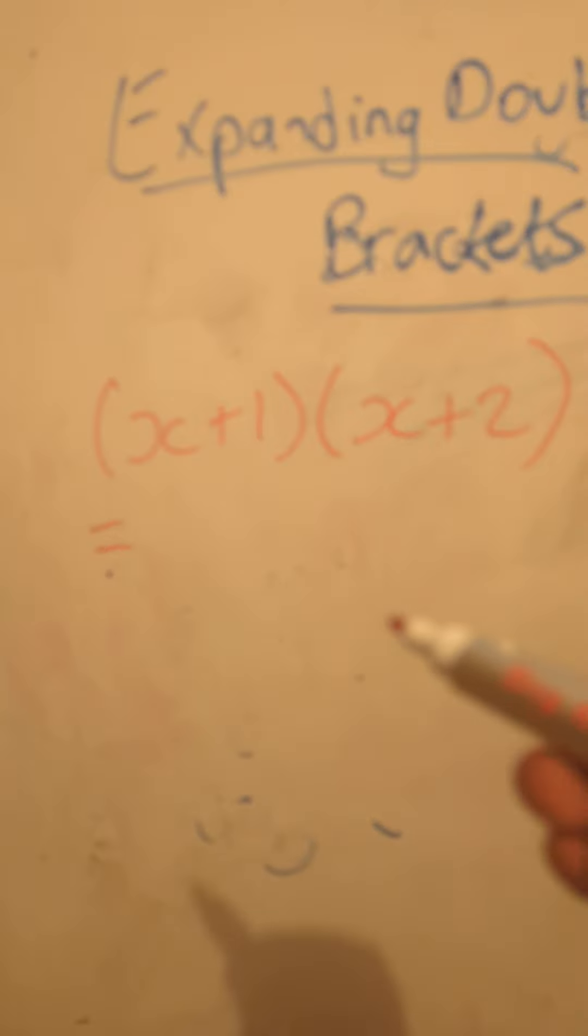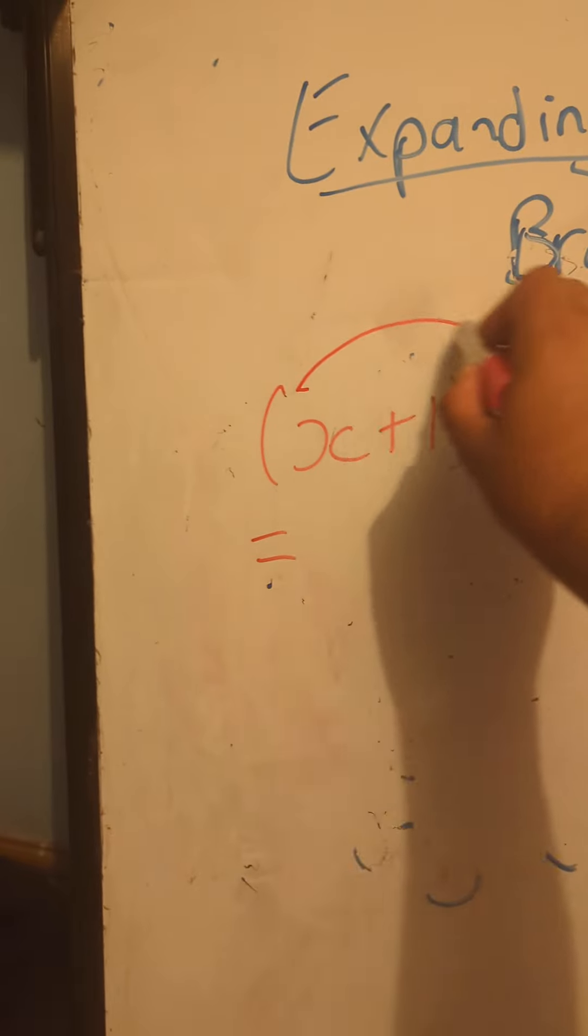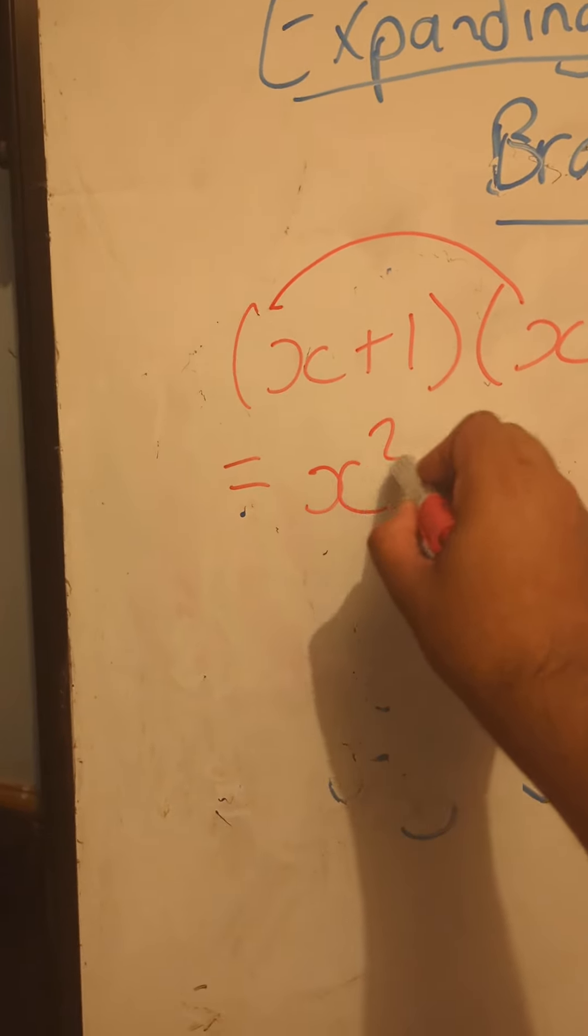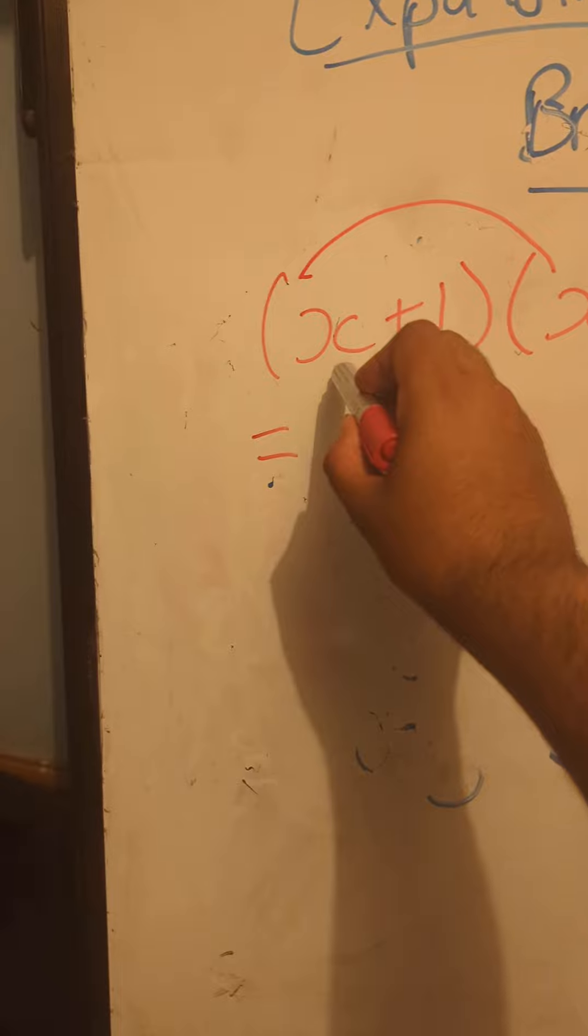So expanding brackets - I'll do it by the FOIL method. First: x times x is going to be x squared.